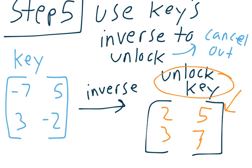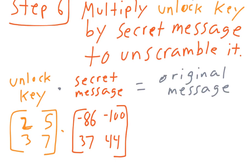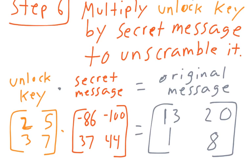So this is the last step. Take the unlock key, multiply it by a secret message, and you're going to unscramble it. So, again, I take the unlock key, multiply that by the secret message I got, this big number one. When I do this, and again, do it on your calculator, or do it by hand, it's up to you, but you'll get back the original message, which in this case was 13, 1, 20, and 8, which, look at your letters in the alphabet, right? M, A, T, H. What does that spell? That spells math.